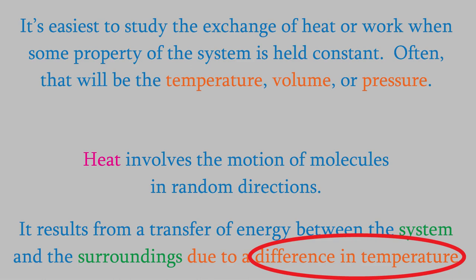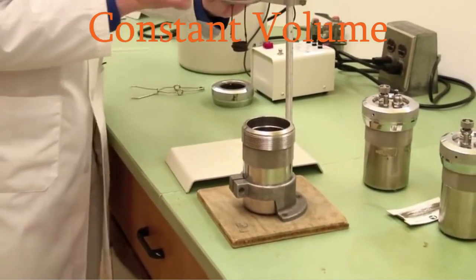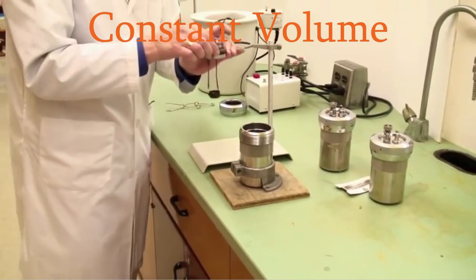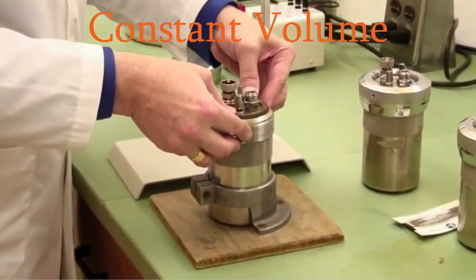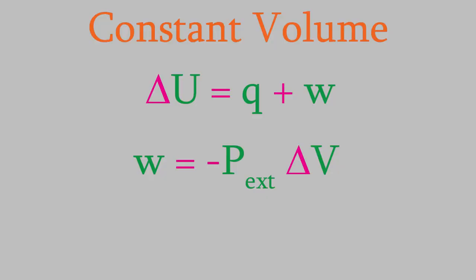First, let's think about what happens if the volume is constant. In order for that to happen, the system needs to be contained inside something with rigid walls so that the volume can't change. That's exactly what we do in a bomb calorimetry experiment, which is something you'll probably be doing in your lab course very soon. Remember, the work is equal to the negative of the external pressure times the change in volume. Since in this case we're holding the volume constant, that means the work must be equal to zero. So, when the volume is constant, the change in energy is just equal to the heat exchanged with the surroundings. We can put a little V subscript next to the heat to remind us that the volume is constant.